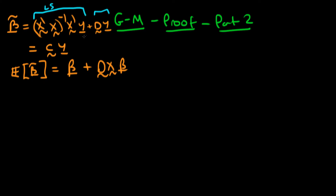We could write this another way: because I've got y in both of these terms here, I can just write this as some matrix C times y, where C is (X'X)^{-1}X' plus D. So we got this expression for the expectation of beta tilde.